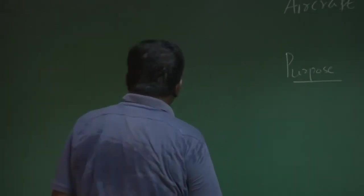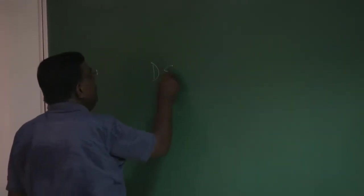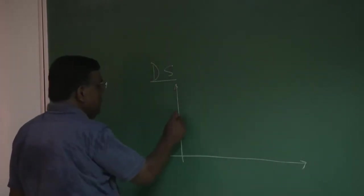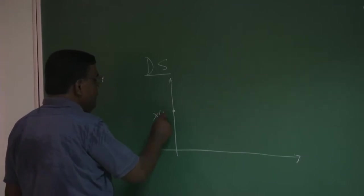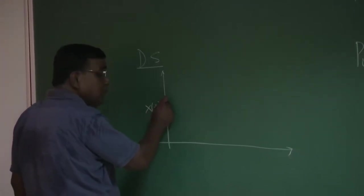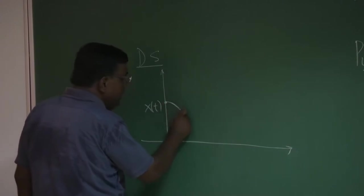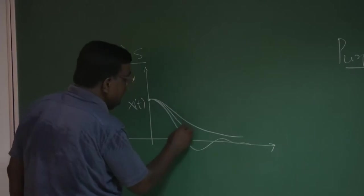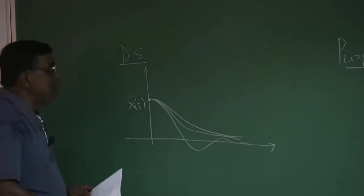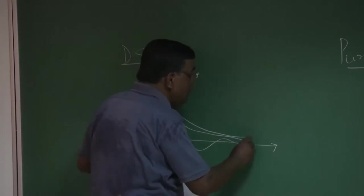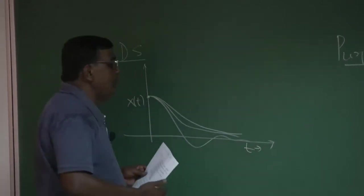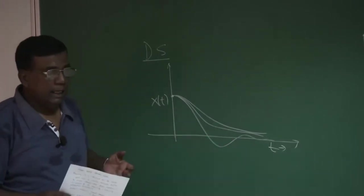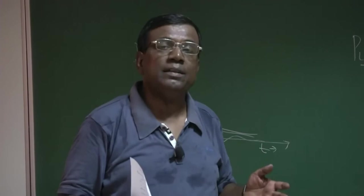For example, if a system is dynamically stable, graphically we show it like this: I give a disturbance and withdraw it, and the system may come back in various ways. The question is how its transient behaves with respect to time and whether it is coming back to equilibrium. That is the area we address under the umbrella of dynamic stability.